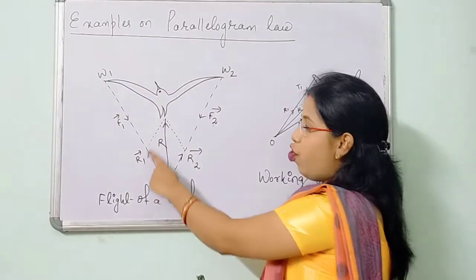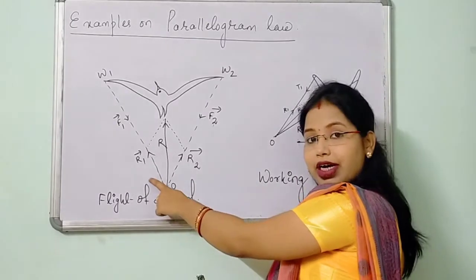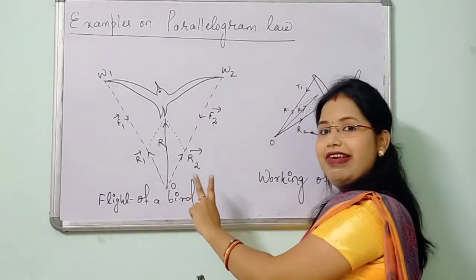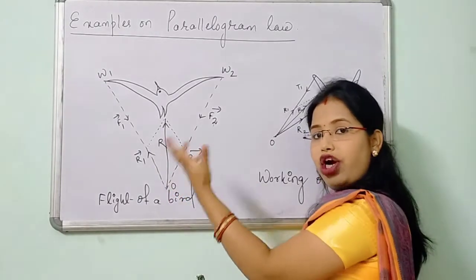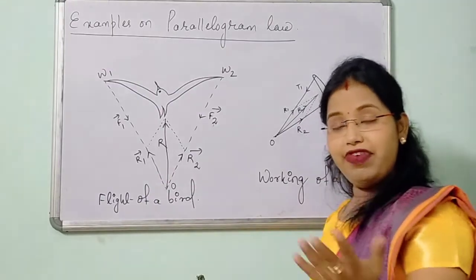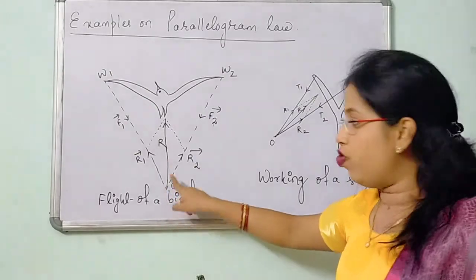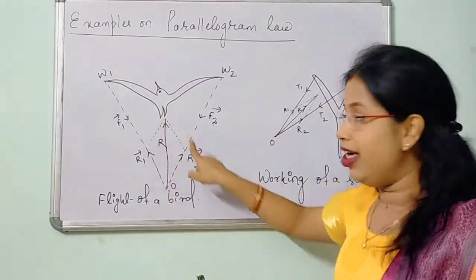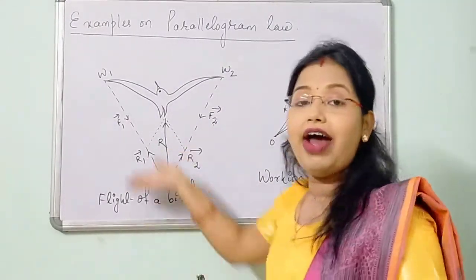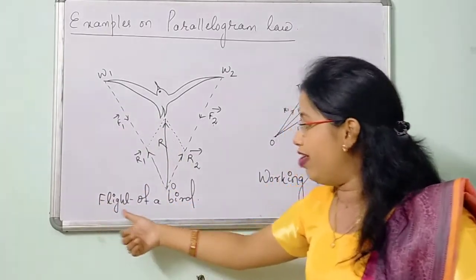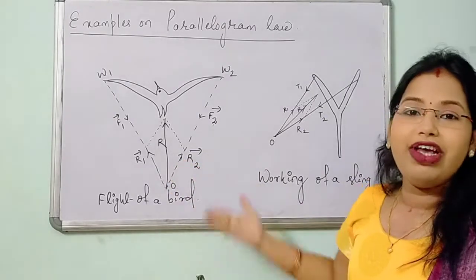So if we draw a parallelogram here, then R1 vector and R2 vector are the two adjacent sides of the parallelogram drawn from the same point O. Then the resultant will be the diagonal of the parallelogram drawn from the same point. The resultant is in the upward direction — that's why the bird can fly upward. So this is the flight of a bird, in which the parallelogram law is used.